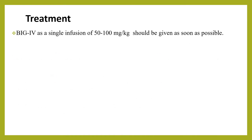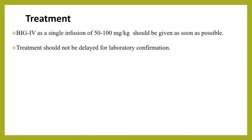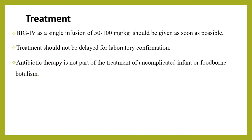Regarding treatment, human botulism immunoglobulin given intravenously at a dose of 50 to 100 mg/kg should be given as soon as possible after infant botulism is suspected, so as to immediately end the toxemia and arrest progression of paralysis. When infant botulism is suspected, treatment should not be delayed for laboratory confirmation.